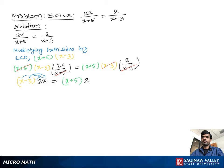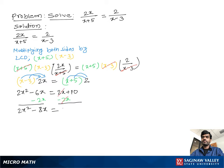Using the distributive property, we write 2x squared minus 6x on the left, equal to 2x plus 10 on the right. Then we subtract 2x from both sides to get 2x squared minus 8x equals 10.